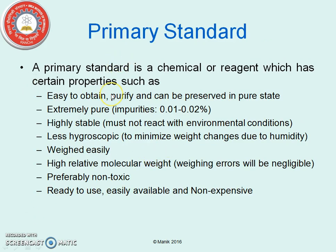Primary standard. A primary standard is a chemical or organic agent which has certain properties such as easy to obtain, purify, and can be preserved in pure state. They must be extremely pure and impurities must not exceed 0.02%. They must be highly stable and must not react to environmental conditions like carbon dioxide, moisture, etc. They must be less hygroscopic in nature so that weight changes are minimized. They must be easy to weigh and must have high relative molecular weights so that the weighing error will be negligible.